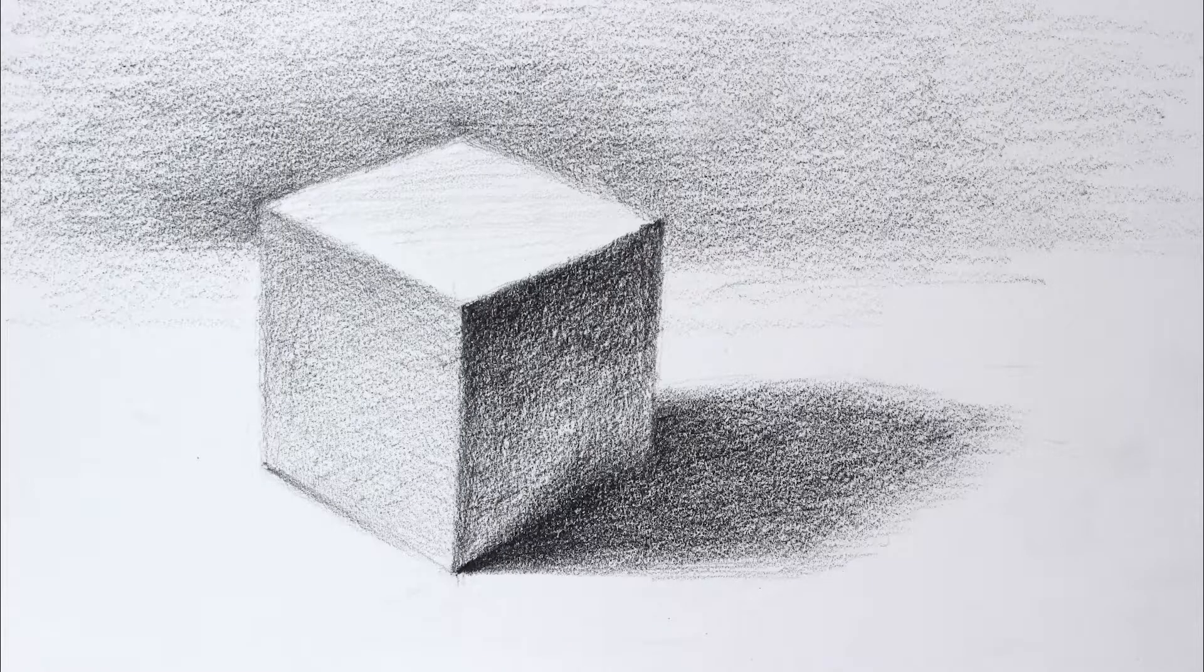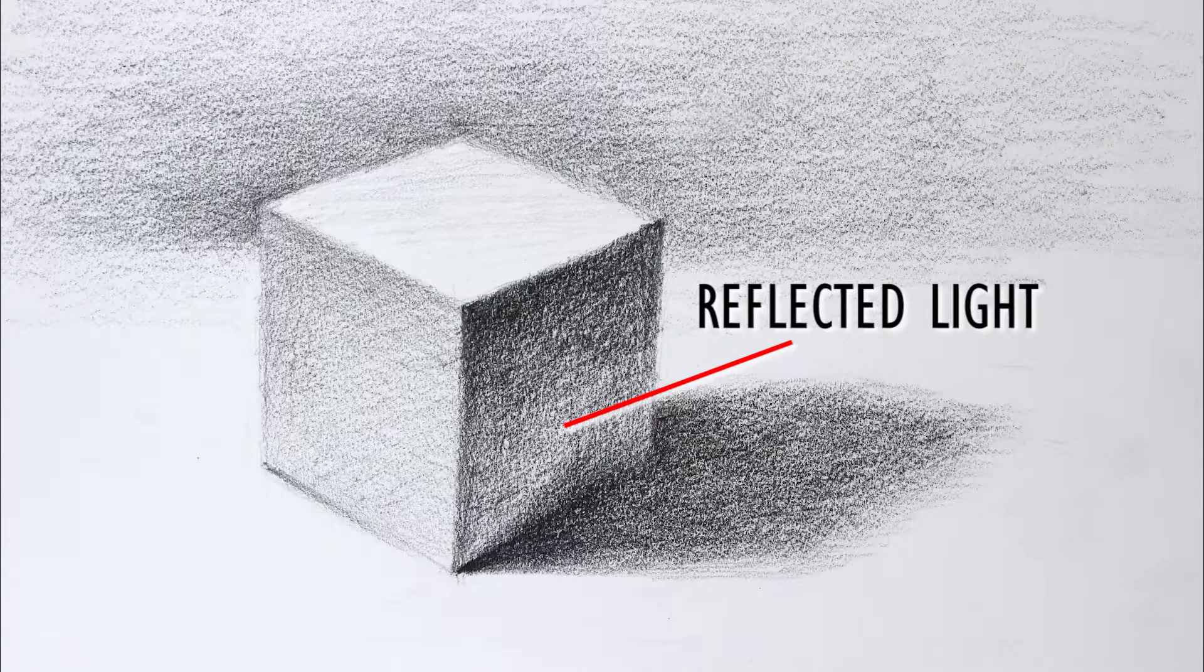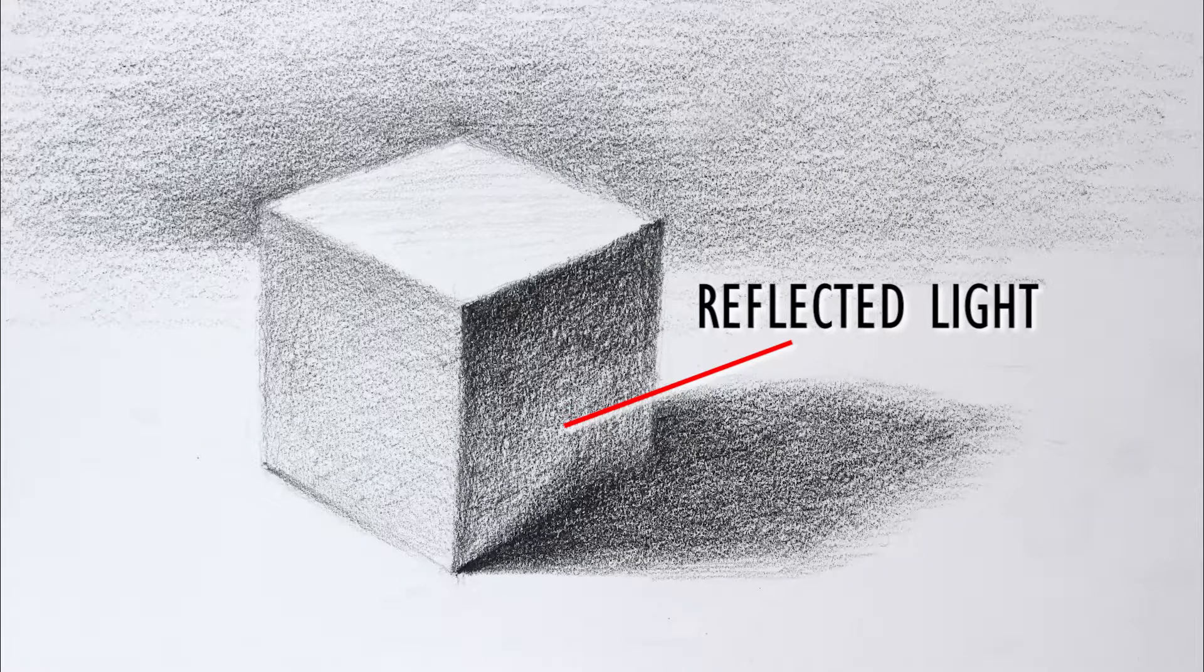Now notice there is some variation in the sides, especially this darkest side. In fact the cast shadow is darker than the object where they meet up. This is because there's some reflected light bouncing up into the bottom of this side of the cube. And we'll talk more about reflected light as we discuss rounded objects.